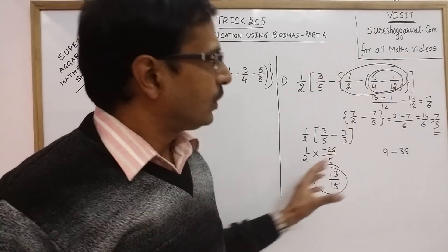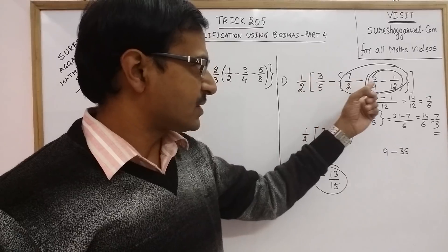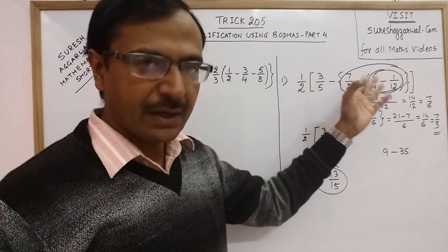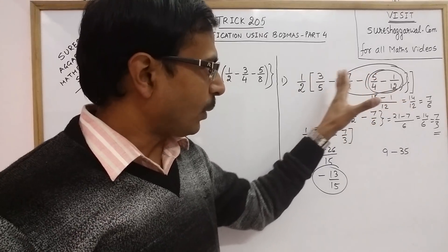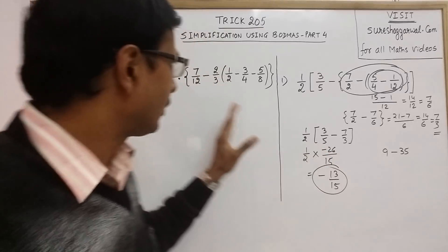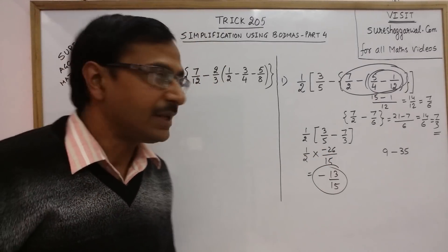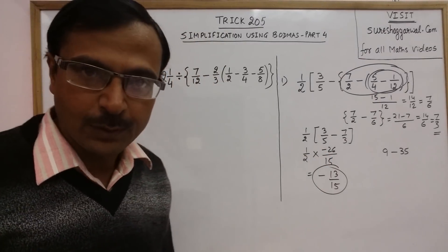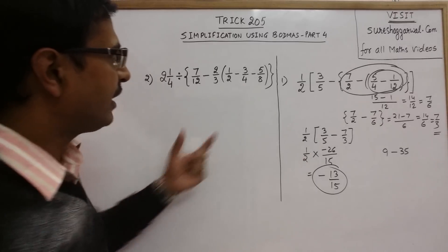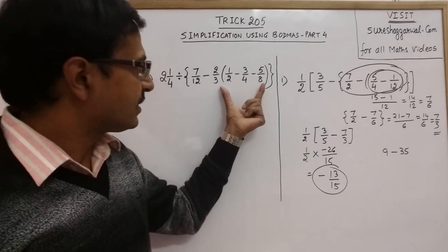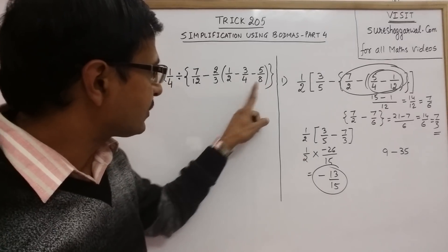Once you know the sequence of dealing with brackets, the problem becomes much simpler. Let us solve one more problem and then we will conclude this Part 4 of the video. Again we have a parenthesis — that is the simple bracket — with 3 terms here.